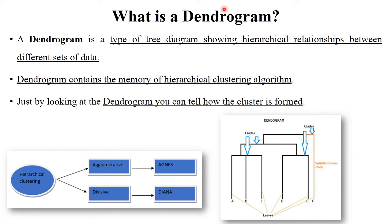The next point is: what is a dendrogram? A dendrogram is generally used as a representation of hierarchical clustering. This is a tree-type diagram and it shows the hierarchical relationship between different datasets or clusters — for example A, B, C, D, E, F. These individual clusters are called leaves. After combining clusters, such as A, B, and C together, that combined group is called a clade. In this way clusters are represented, and it is easy to find out how many clusters there are using the dendrogram.